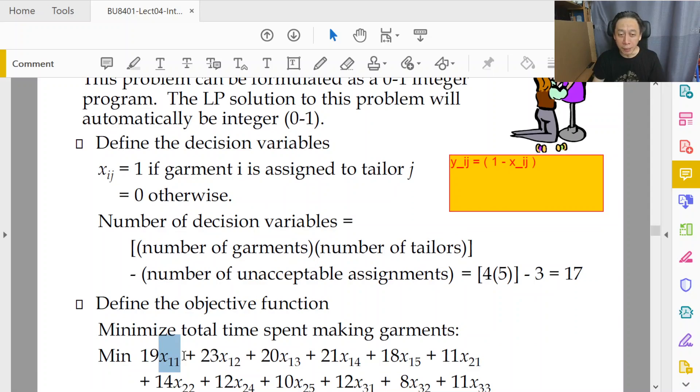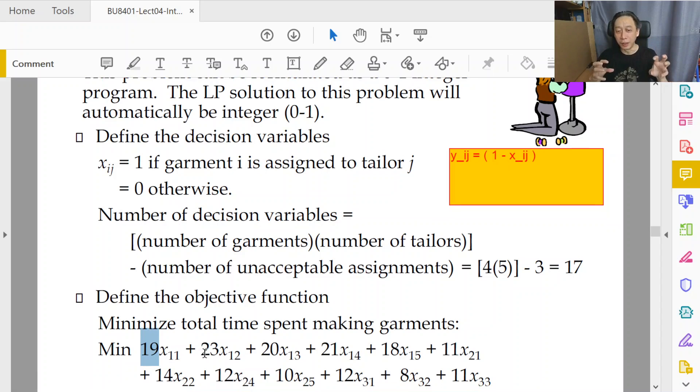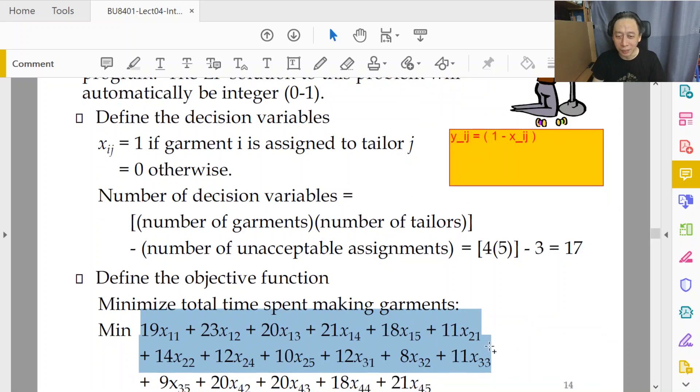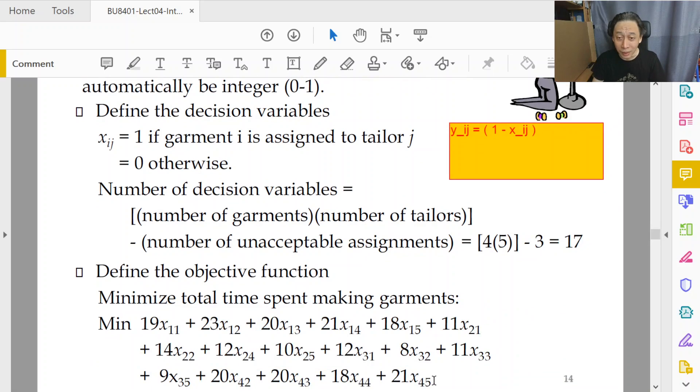Then 19 times xij will be 19 because it's 1. But if it is not assigned, then solver will force the variable to 0 and 19 times 0 is 0. Any number times 0 is 0. So we have a big switch here that is automatic. So if garment 1 was actually assigned, we will incur 19 hours, and that's true. All these addition of the sum product, addition of the products of the variable and the coefficient, it is linear.